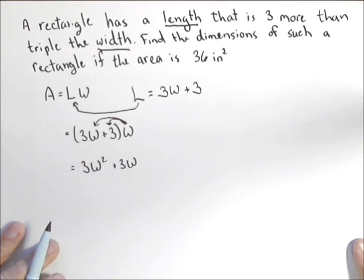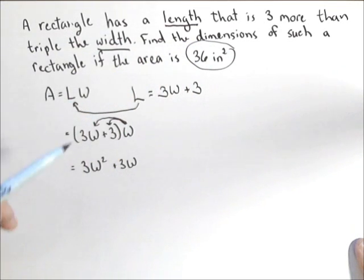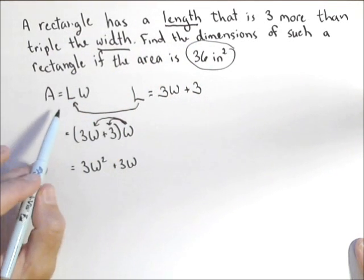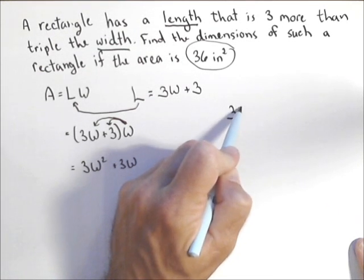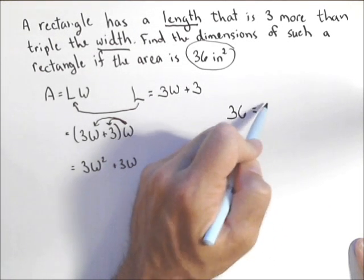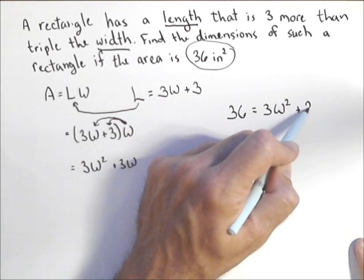Now we're looking for one specific one. We're looking for one that has an area of 36 inches. So we're going to be putting that in for the output here. So over here, I'm going to set 36 equal to my quadratic, three W squared plus three W.